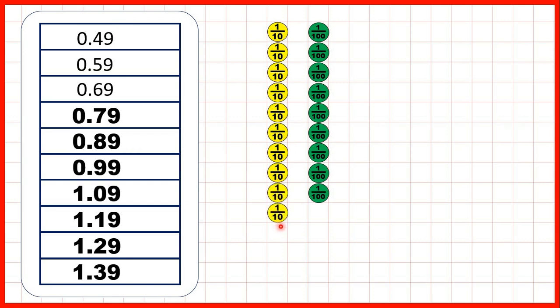But now we have ten tenths. And to see why that's 1.09, what we're doing is changing those ten tenths into one whole. So that's one whole and nine hundredths, or 1.09. And then we can keep on counting in tenths up to 1.39.